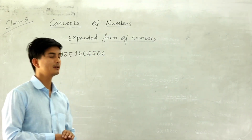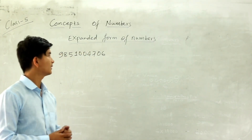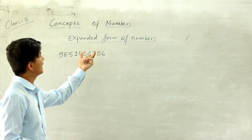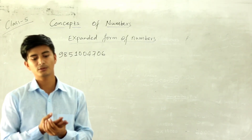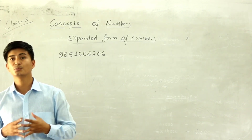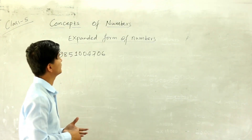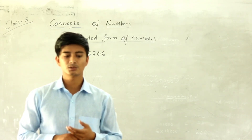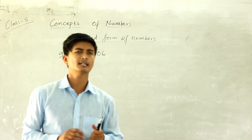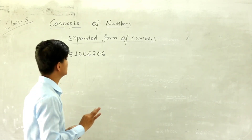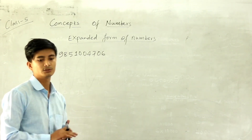Welcome to our next lesson. In this lesson we are going to learn about expanded form of numbers. I have written here one number. Expanded means we have to expand this number. In a simple way, when a number is written with its place value, we call it an expanded number or expanded form. We can expand this number in three ways — I will teach you all three ways.